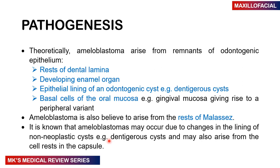The pathogenesis is theoretically from remnants responsible for the odontogenic epithelium. It can arise from the rests of the dental lamina, developing enamel organs, epithelial lining of other odontogenic cysts, and basal cells of the oral mucosa — the gingival mucosa — which gives rise to the peripheral variant. Ameloblastoma also arises from the rests of Malassez. It is well known that ameloblastomas may occur due to changes in the lining of non-neoplastic cysts like dentigerous cysts, as well as from cell rests in the capsule.